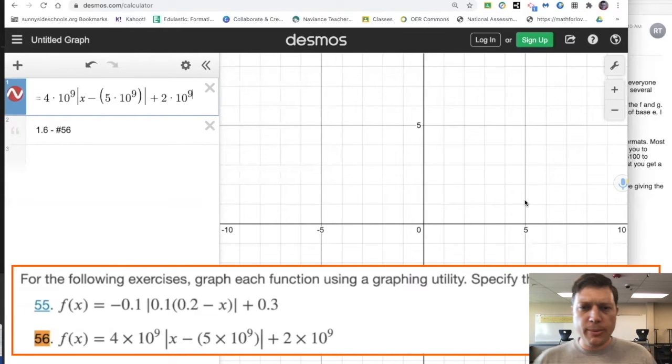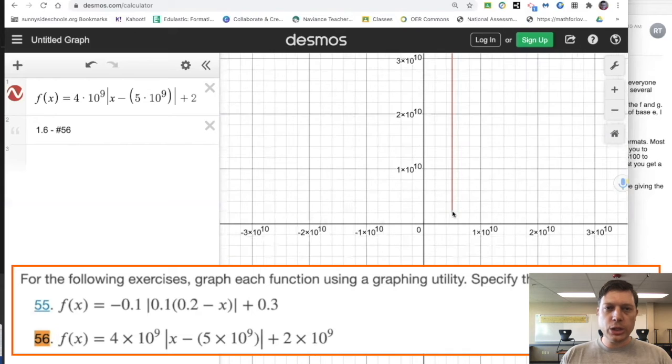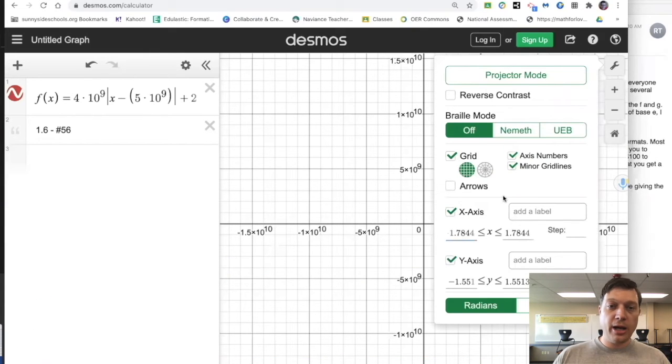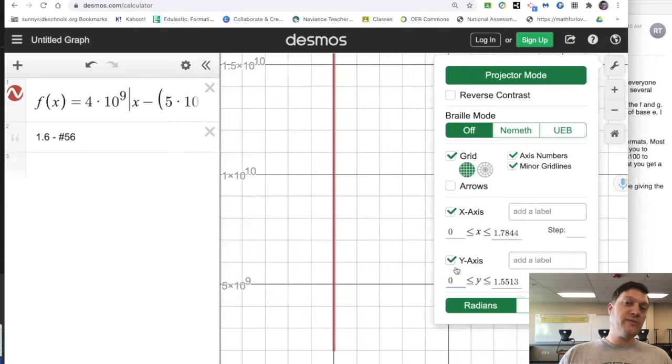But with your Desmos, you're able to see some real-time shifting until we include billions. So the issue here being that 4 times 10 to the 9th power of the absolute value of x minus 5 times 10 to the 9th power, that's 5 billion, subtracted by 2 times 10 to the 9th power.